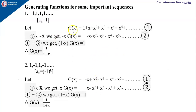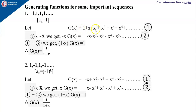Let us see some important generating functions for various sequences. Suppose the sequence is 1, 1, 1 — all 1s — that is, all coefficients are 1, meaning the k-th term ak equals 1. Then g(x) equals 1 plus x plus x² plus x³ and so on. Let us call this equation 1.